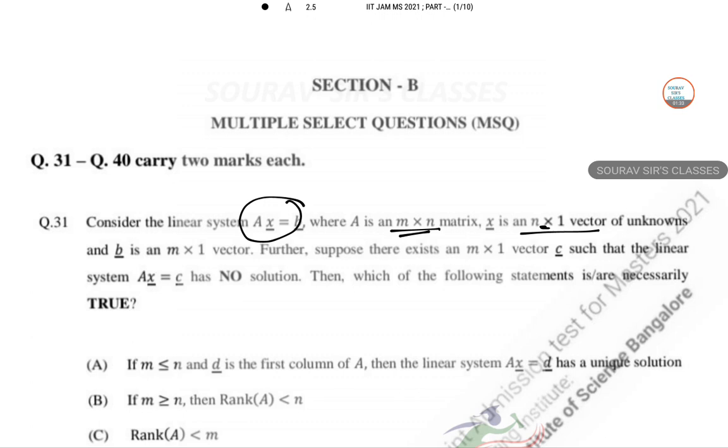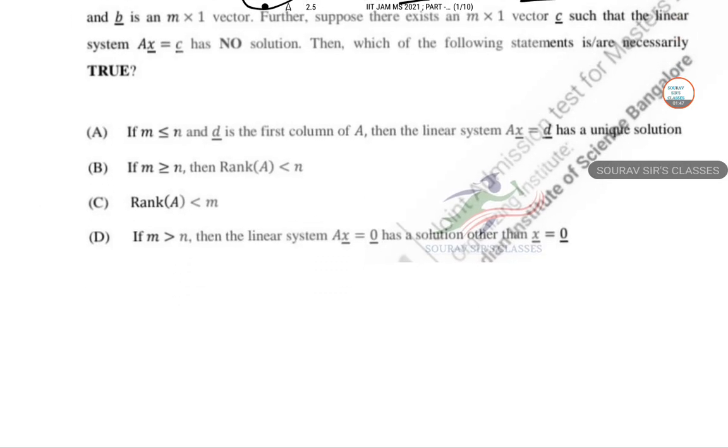Where A is M into N, X is N into 1, and B is M into 1. AX equal to C has no solution, so obviously rank of A not equal to rank of augmented matrix. Let M equal to 3, N equal to 2, and M greater than N.